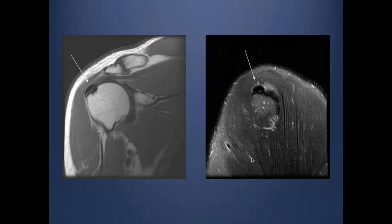Calcific tendinitis can be seen as low signal intensity — lower than the usual dark signal of the tendon — within the tendon itself. It can occur without reactive changes or with reactive changes. There is a good correlation between the presence of reactive changes and patient symptoms.